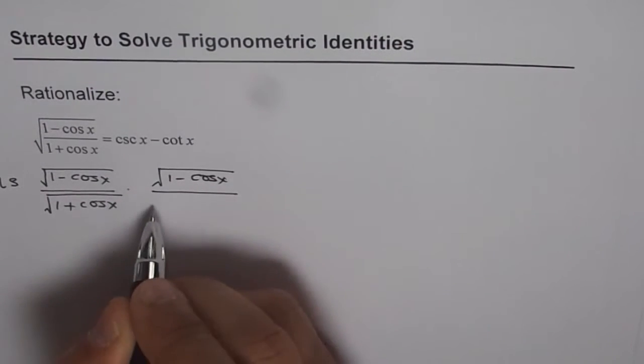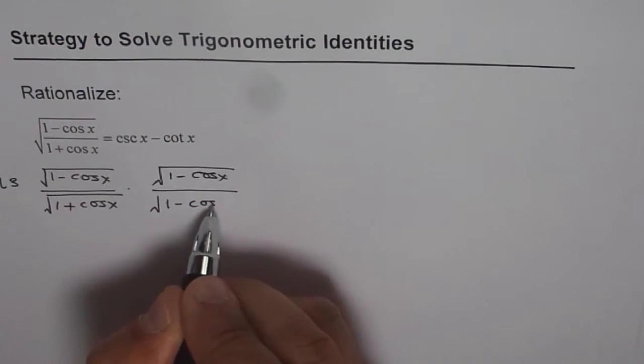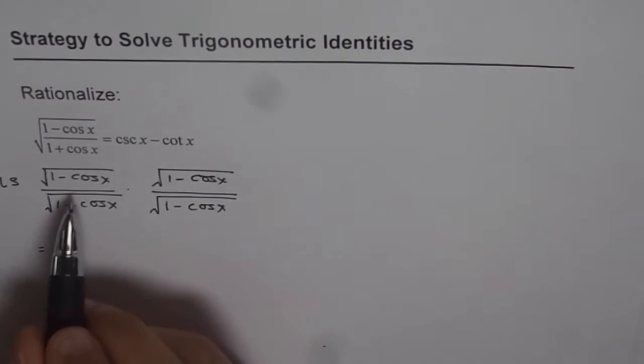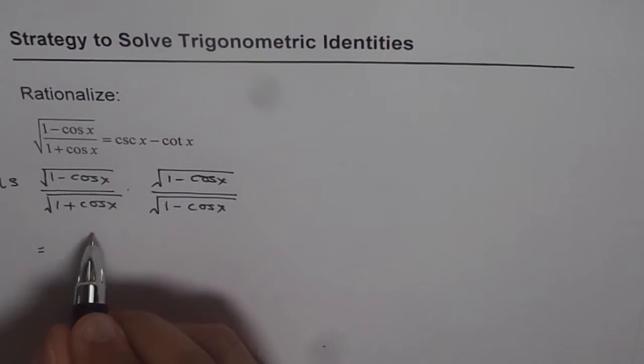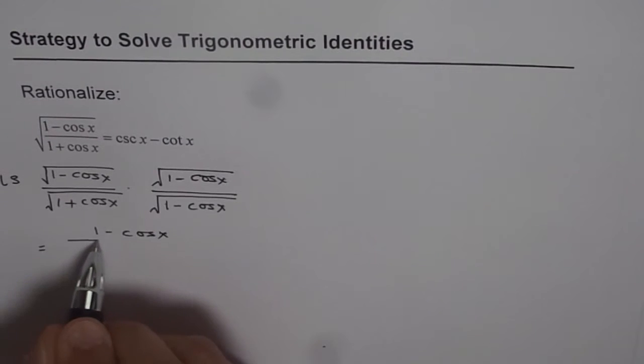Now in this case, we are rationalizing the denominator. As you can see, the numerator becomes (1 minus cos x) whole squared, and the square root of that will be just 1 minus cos x. So we get 1 minus cos x in the numerator.